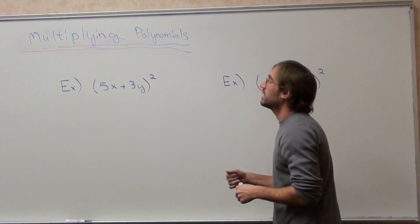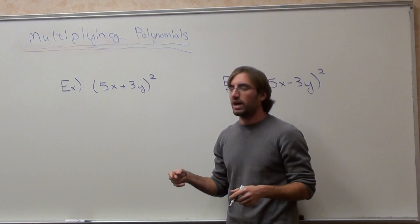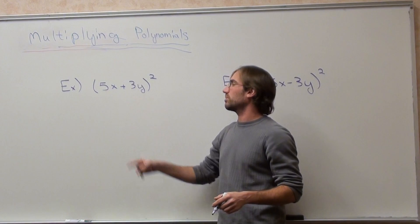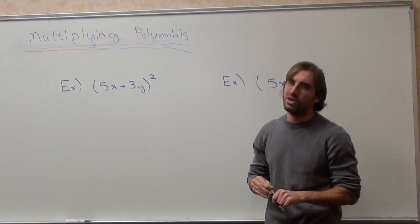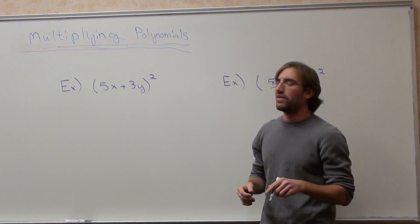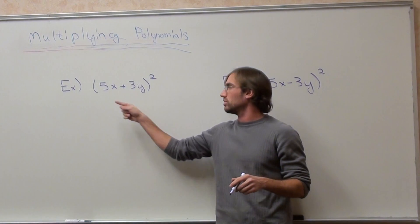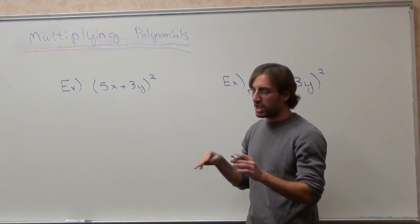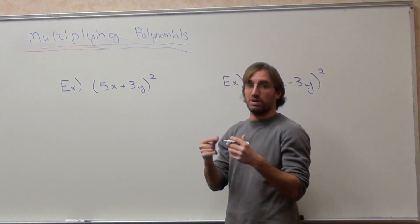This problem is not a distribution problem. You don't distribute the two, and there's a reason why you don't. Some people say it's 25x squared plus 9y squared. No, no, no, no, no. It's not. If it were a multiplication problem, you could go ahead and do that. If it was 5x, 3y, all in one term, then you could do that. But you can't do it when there's an addition or subtraction separating terms.